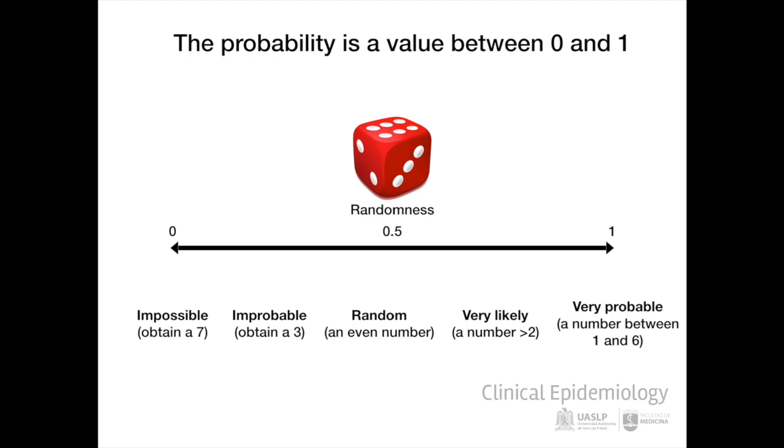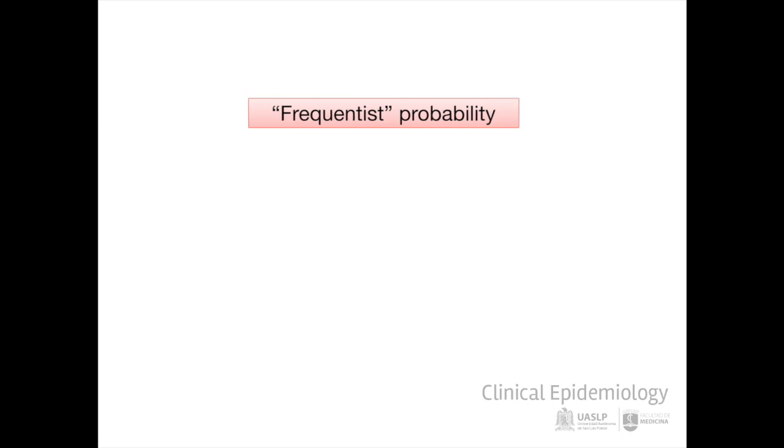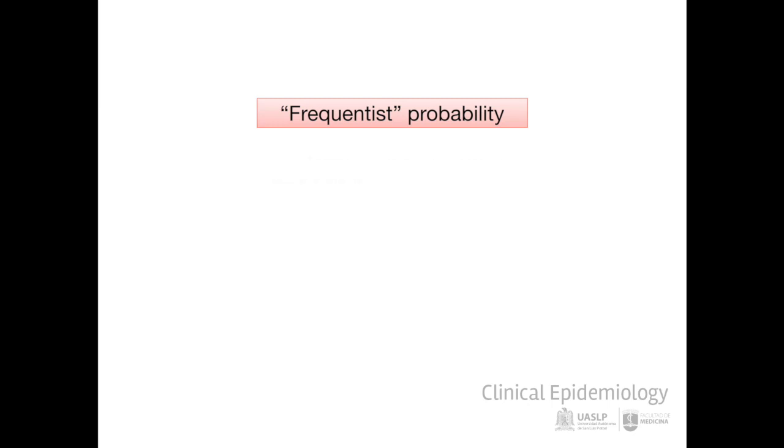The previous example makes use of a probability called frequentist, which is based on the relative frequency of an event expected long term or after a sequence of trials. This approach forms the basis of classical statistics. Frequentist inference estimates the probability that a set of data could occur in case the null hypothesis is true. In this way, the confidence intervals estimate the number of times the true parameter is captured within the range if we repeat the calculation many times.